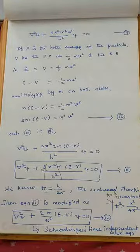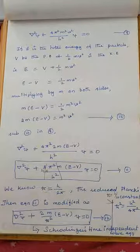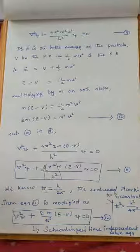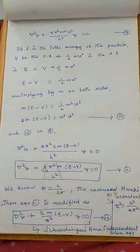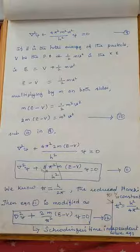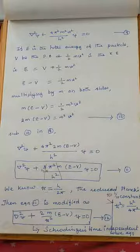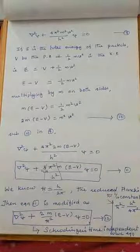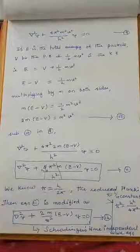Both expressions are Schrödinger's time-independent wave equations. This is the end of the derivation for the time-independent Schrödinger's equation. Please watch this lecture, derive it in your notes, and keep it for further clarification. We will meet in the next session to derive the time-dependent Schrödinger's wave equation. Have a nice time. Thank you.